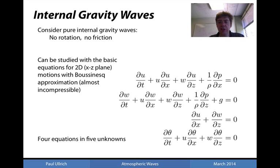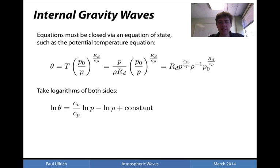This set of equations represents 4 equations in 5 unknowns — u, w, p, rho, and theta — and hence we need an equation of state to close the system. The equation of state we will use is the potential temperature equation. We can rewrite the temperature term in terms of pressure and density via the ideal gas law, and taking the logarithm of both sides, we isolate individual product terms using the fact that the log of a product equals the sum of logarithms, obtaining a formula for potential temperature.